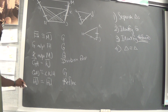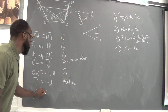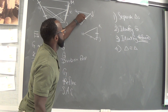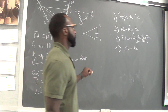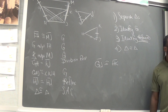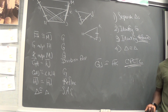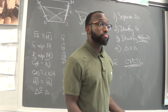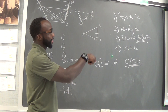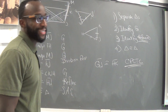Now we have all our congruent parts: one, two, three. So the triangles are congruent by the side-angle-side postulate. Then finally, you can say that GJ is congruent to HK by CPCTC. That's all overlapping triangles is about. So now we've covered overlapping triangles — these are your steps. Don't forget to like and subscribe. Mr. DoodleMath, out!